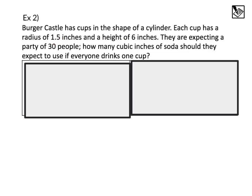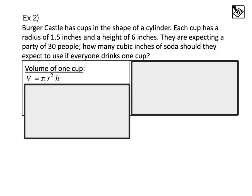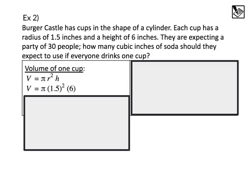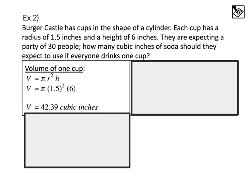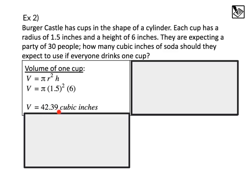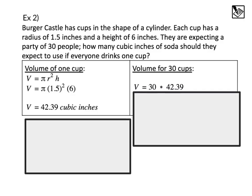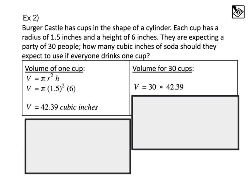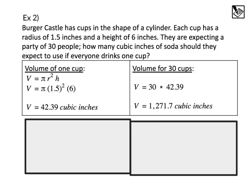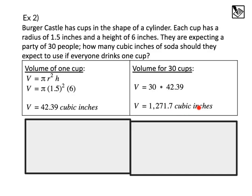Last example, Burger Castle. Oh geez, these are making me hungry. Okay, Burger Castle has cups in the shape of a cylinder. Each cup has a radius of 1.5 inches and a height of 6 inches. They are expecting a party of 30 people. How many cubic inches of soda should they expect to use if everyone drinks one cup? Well, we know it's a cylinder shape, so we're going to use that formula, pi r squared h. The radius was 1.5, the height was 6, and we're going to multiply that pi as 3.14, and we'll get a volume of 42.39. That's the volume of one Burger Castle cup. We want the volume of 30 Burger Castle cups. So what we can do is take that volume and multiply it by 30. That's the volume we got here, times 30 cups, to get a final volume of 1,271.7 cubic inches.